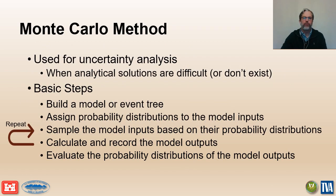The Monte Carlo method is used in risk analysis to estimate uncertainty. First, we build a deterministic model or event tree that calculates something like a peak reservoir stage, a factor of safety, a system response probability, a life loss estimate, or a risk estimate. Next, we assign probability distributions to define the uncertainty in the model inputs. The model inputs are then sampled according to their probability distributions, and for each sample we calculate and record the model results. By repeating this process many times, we get many samples of the model results, which can be used as an estimate of the uncertainty in the output.